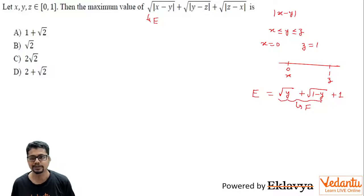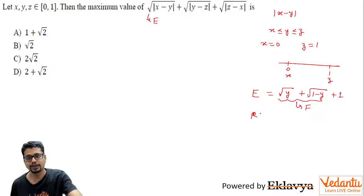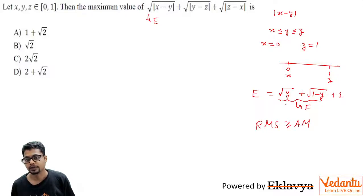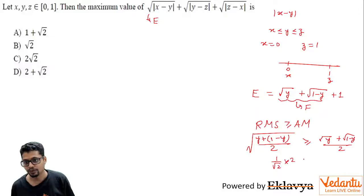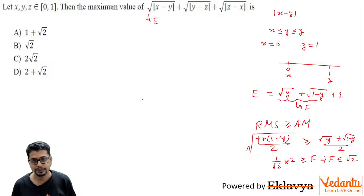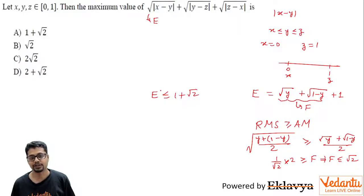Now, 1 is constant, so what we need to maximize is f = √y + √(1−y). Applying RMS ≥ AM: √((y + (1−y))/2) ≥ (√y + √(1−y))/2, which gives 1/√2 ≥ f/2, so f ≤ √2. Therefore E = f + 1 ≤ √2 + 1, so the maximum possible value of E is 1 + √2.